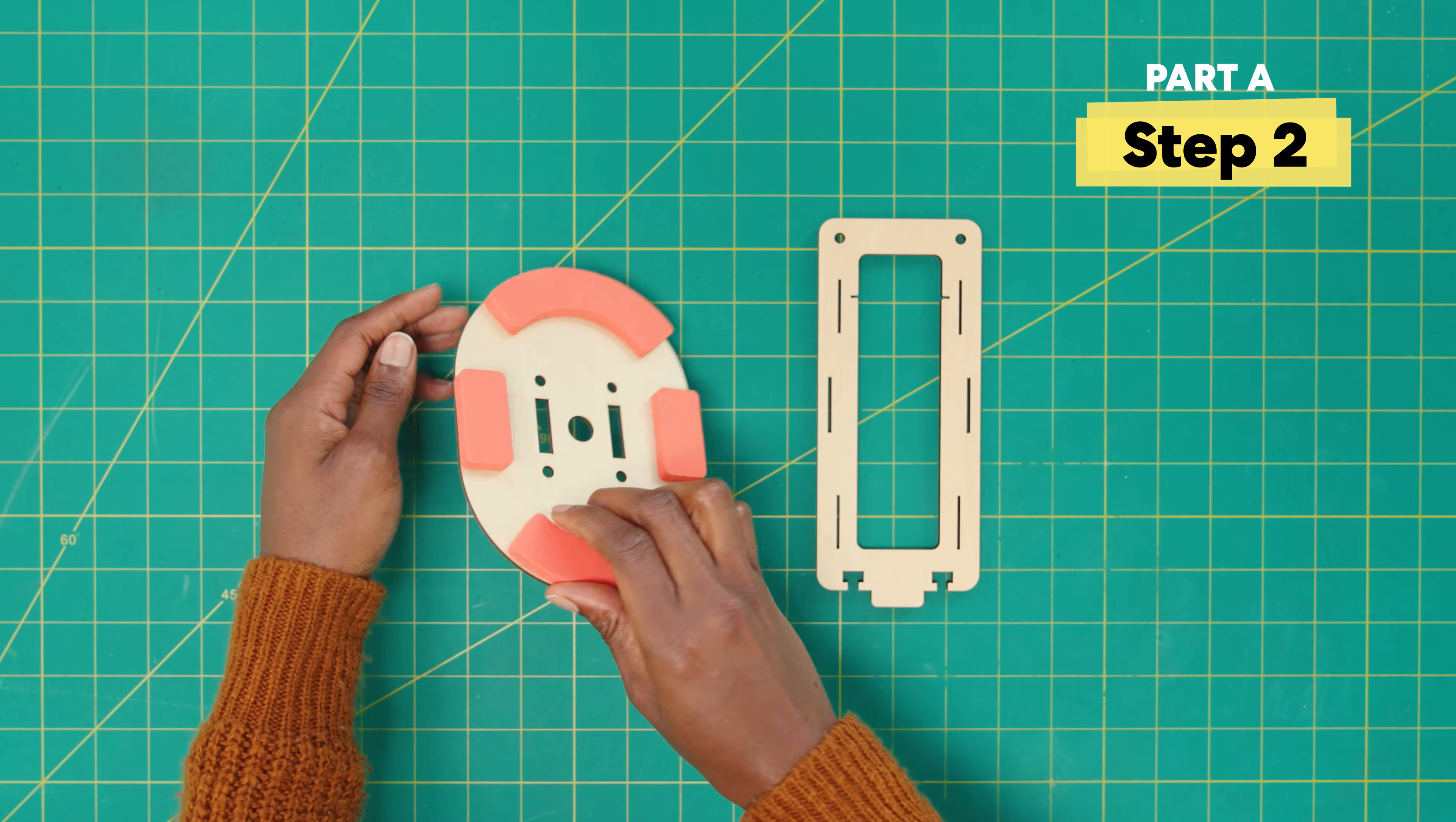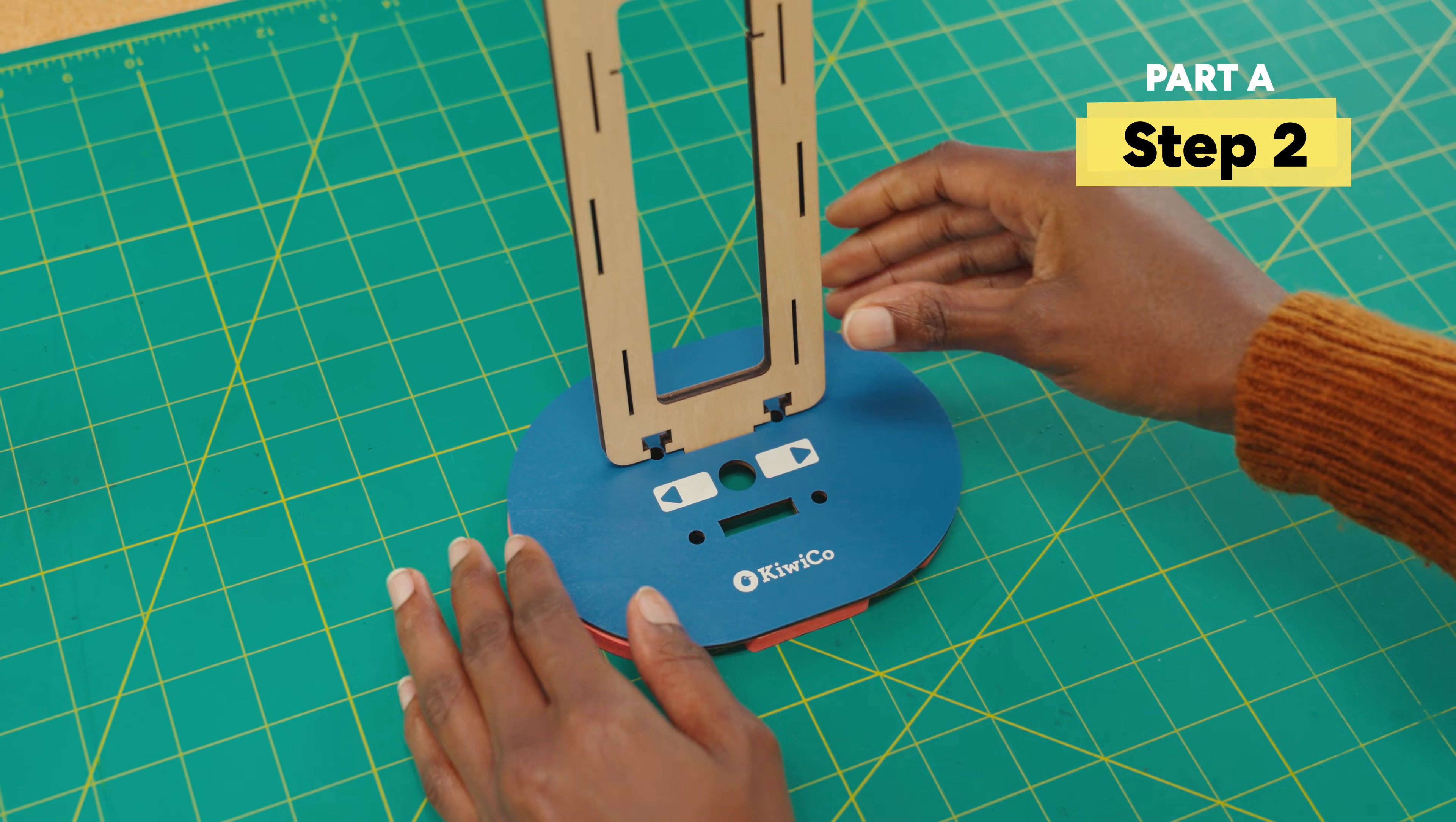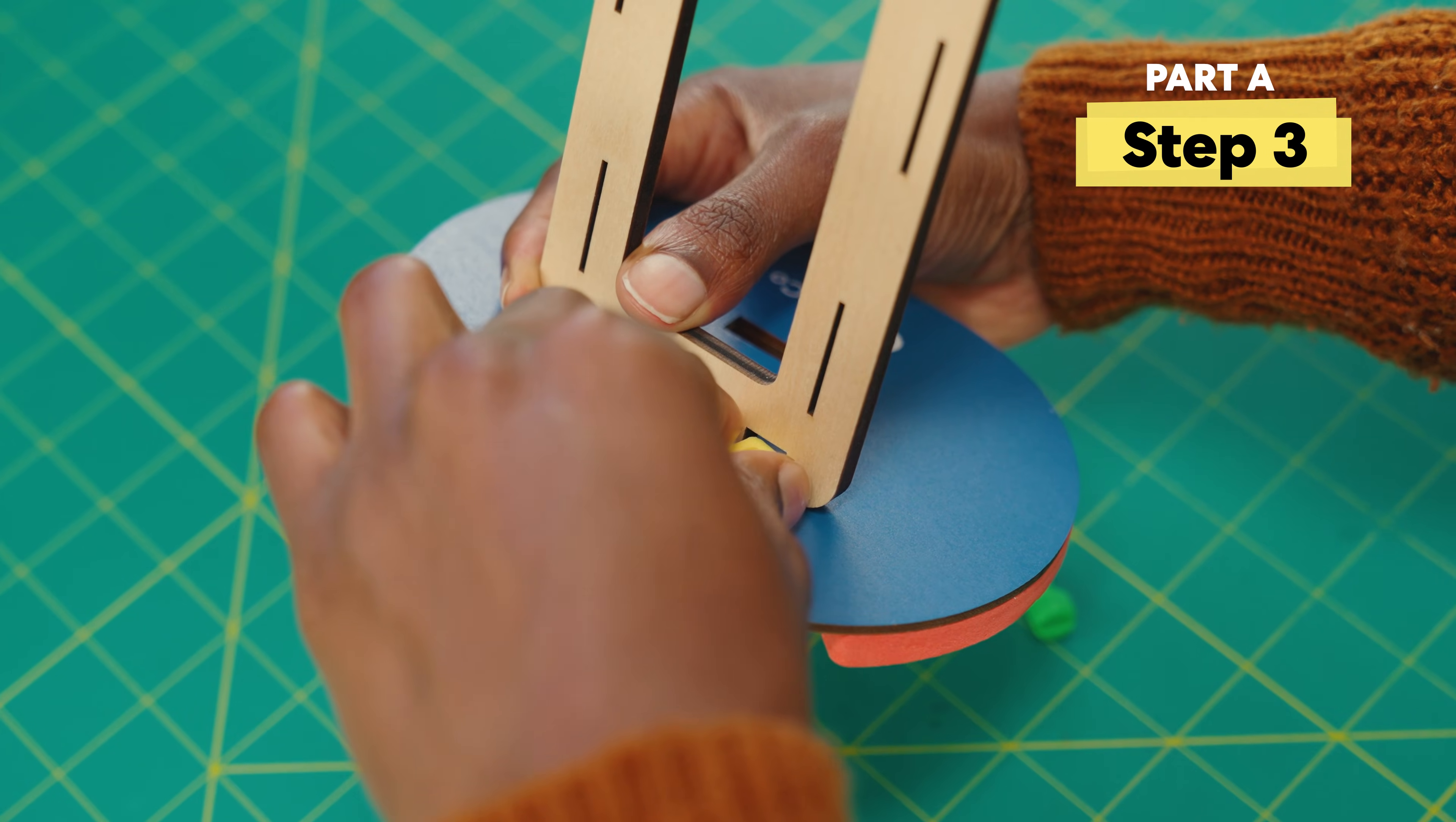Next, flip over and attach one frame here. Now, use a T-clip and bolt to hold the frame in place.